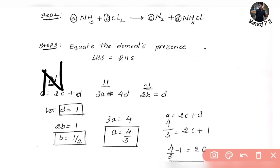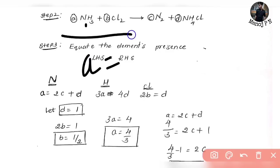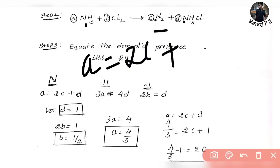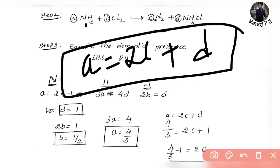Nitrogen on LHS is present A times. In the subscript element there is 1, so 1 into A which is nothing but A. On the RHS, we put nitrogen together — 2 times C, plus 1 time D. So in the nitrogen equation: A is equal to 2C plus D.